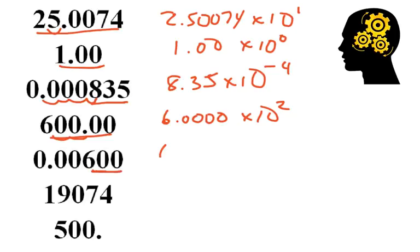Okay, that's 3 significant figures, so 6.00. And it's smaller than 1, so it's going to be negative, and it moved 3 times, negative 3.